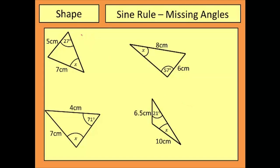Okay, let's have a look at these then. So when I set up my sine rule, I'm going to have sine 27 over 7 equals sine of X over 5. When I multiply both sides by 5 and then do inverse sine, this is going to give me a value for my missing angle of X as 18.9 degrees.